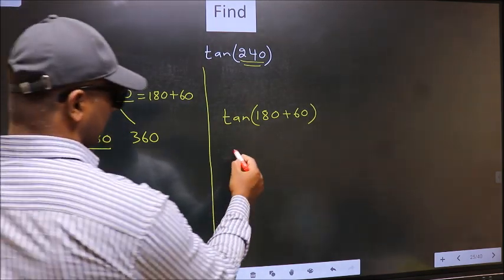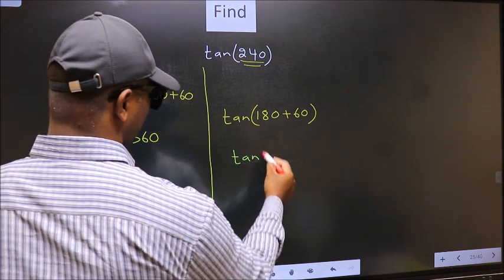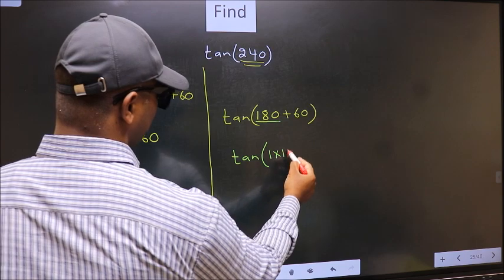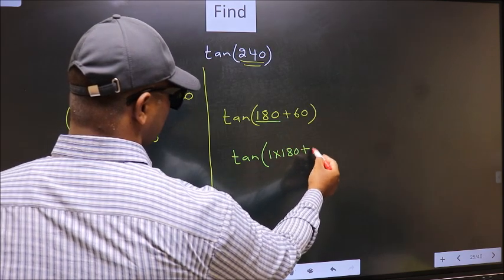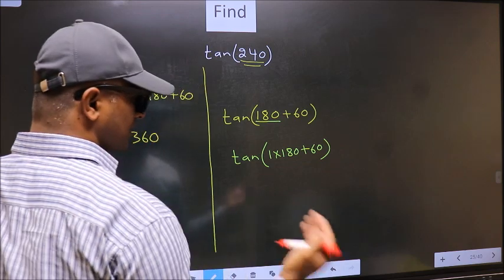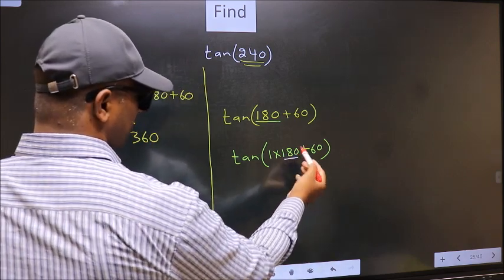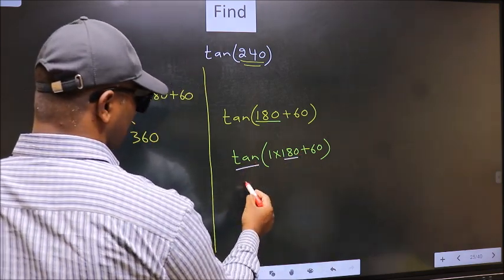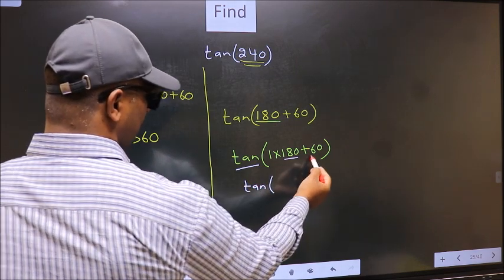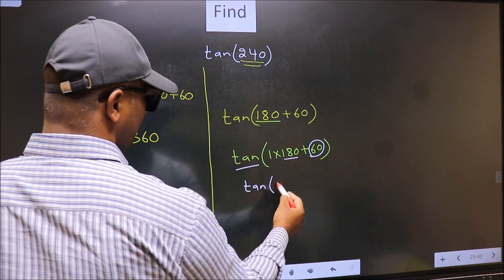Next, tan. In place of 180, we should write 1 × 180 plus 60. Next, here we have 180. So tan is not going to change. It will remain tan. And inside, we get this angle 60.